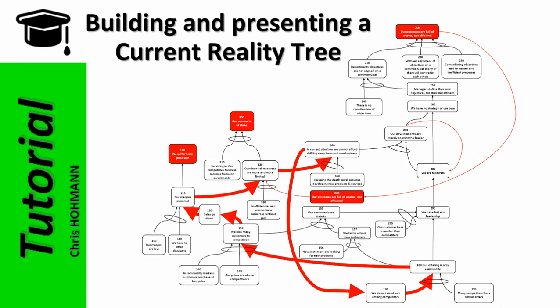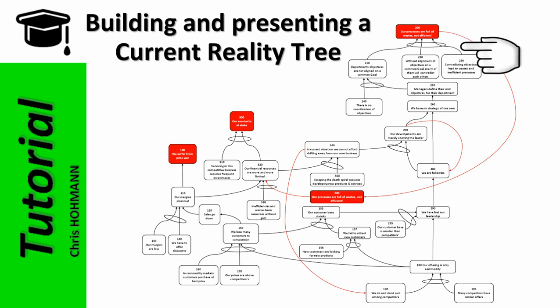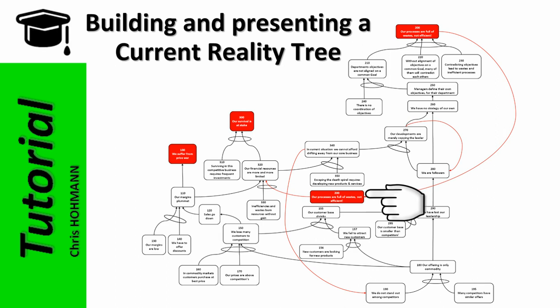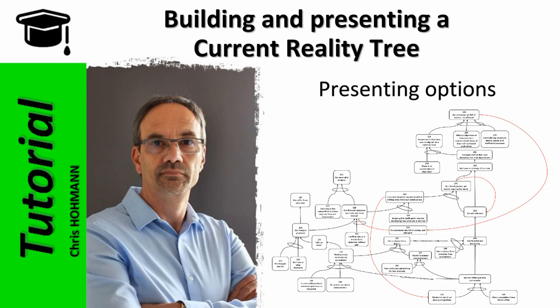The second reinforcing loop goes from entity 340 - in this current situation we cannot afford drifting away from our core business - reinforcing entity 190, we do not stand out among our competitors. As long as we keep doing what everybody else does we cannot distinguish ourselves, staying trapped in a vicious circle: many competitors with similar offers, customers not interested, sales dropping, and so on. The third loop goes from entity 200 - our processes are full of waste and not efficient - combining with margin plummeting, and these inefficiencies burning resources further limits our financial resources.